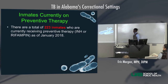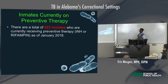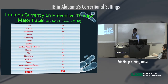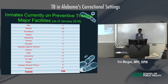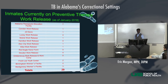Inmates currently on preventive therapy: as mentioned earlier, there are two stages — latent TB infection and active tuberculosis disease. About 87% of what we see in the prison is latent TB infection. We always want to prevent progression to active disease. The next slide breaks down every facility in the state showing how many inmates are on preventive therapy — whether on rifampin or INH. Major facilities from Bibb, Bullock, Donaldson, Draper, Easterling total 194; work releases total 29. All these folks are currently on therapy.